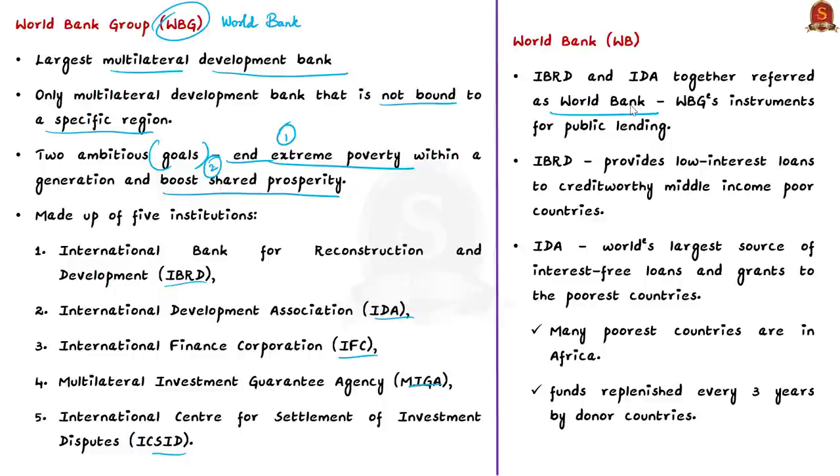Among these five institutions, the International Bank for Reconstruction and Development and the International Development Association together are referred to as the World Bank. These are the World Bank Group's instruments for public lending. The IBRD provides low-interest loans to middle-income poor countries that are credit-worthy. The IDA is the world's largest source of interest-free loans and grants to the poorest countries. The support from IBRD and IDA is provided depending on the eligibility of the member country.